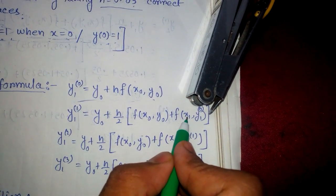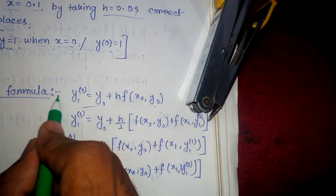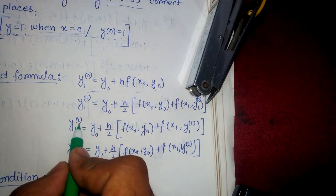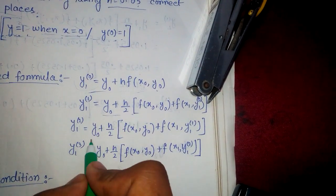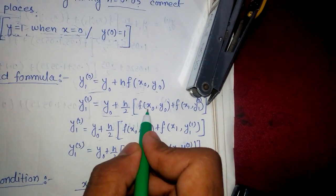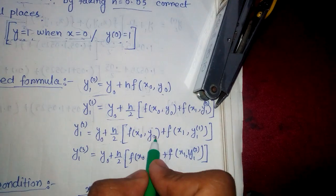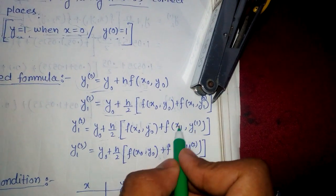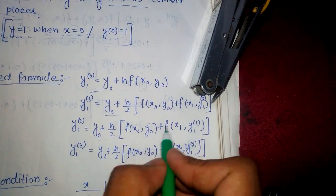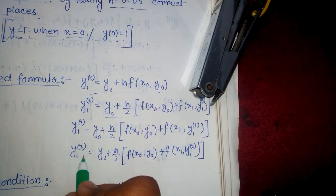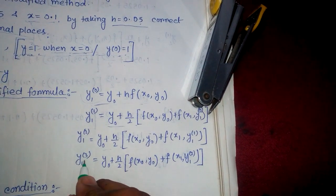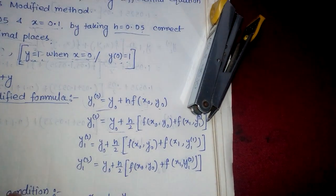Then y1² equals y naught plus (h/2) times [f(x naught, y naught) plus f(x1, y1¹)], where y1¹ is the previous value. We continue calculating y1³, y1⁴ and so on. I will tell you later how far we need to go.